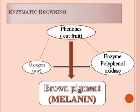This is because of a phenomenon called enzymatic browning. This is a chemical reaction occurring when oxygen present in the air comes in contact with the enzyme polyphenol oxidase present in the cut surface of fruits. This results in the formation of a brown pigment called melanin.